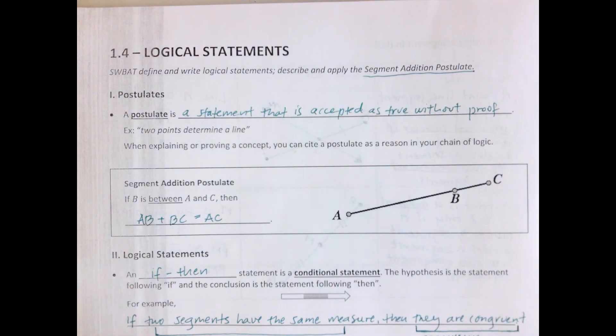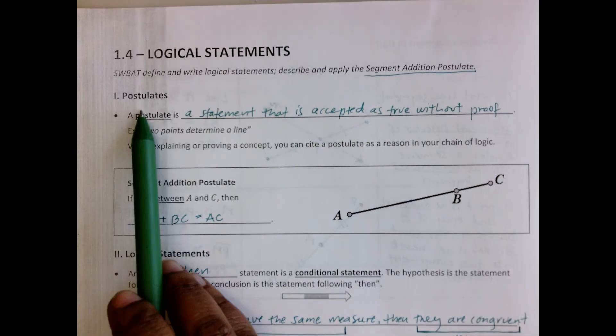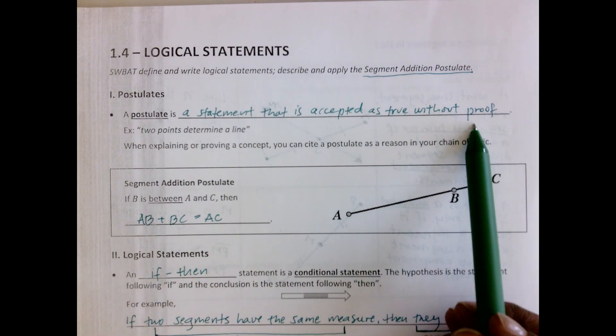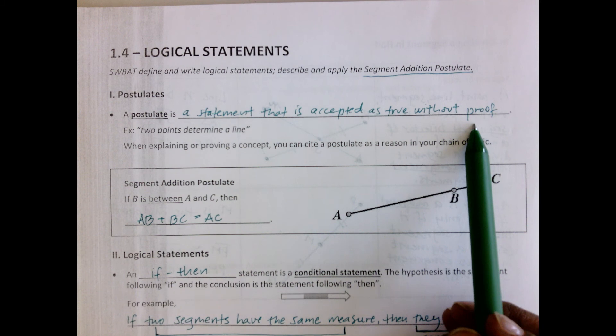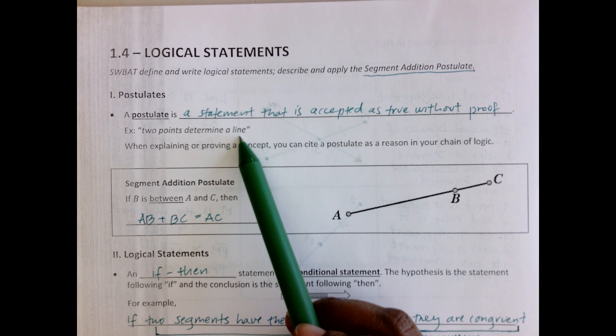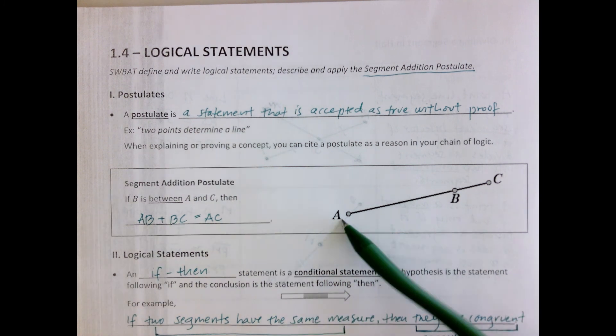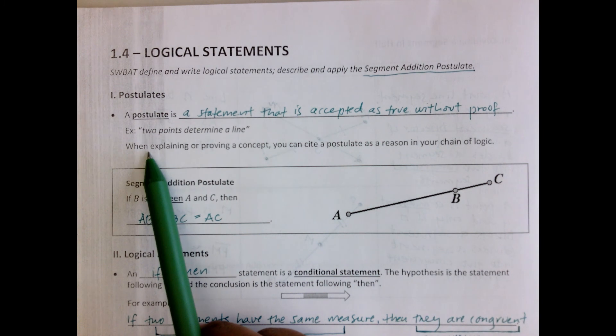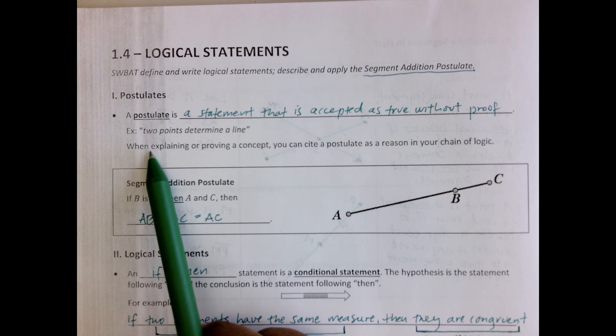What is a postulate? A postulate is a statement that is accepted as true without there needing to be any proof. For example, two points determine a line. It's true. Any two points can make up a line, or a segment. So again, a postulate is simply a statement that does not need to be proven.